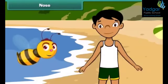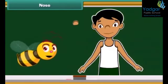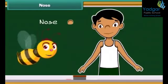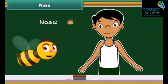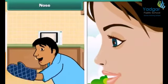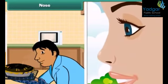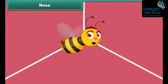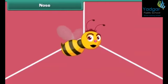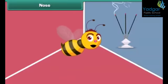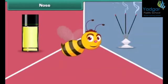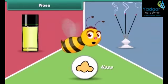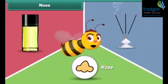The third sense organ of our body is our nose. We have one nose on our face. The nose is the organ of smell, and it also helps us in breathing air. The nose helps us to differentiate and identify smells, such as agarbatti or perfume.